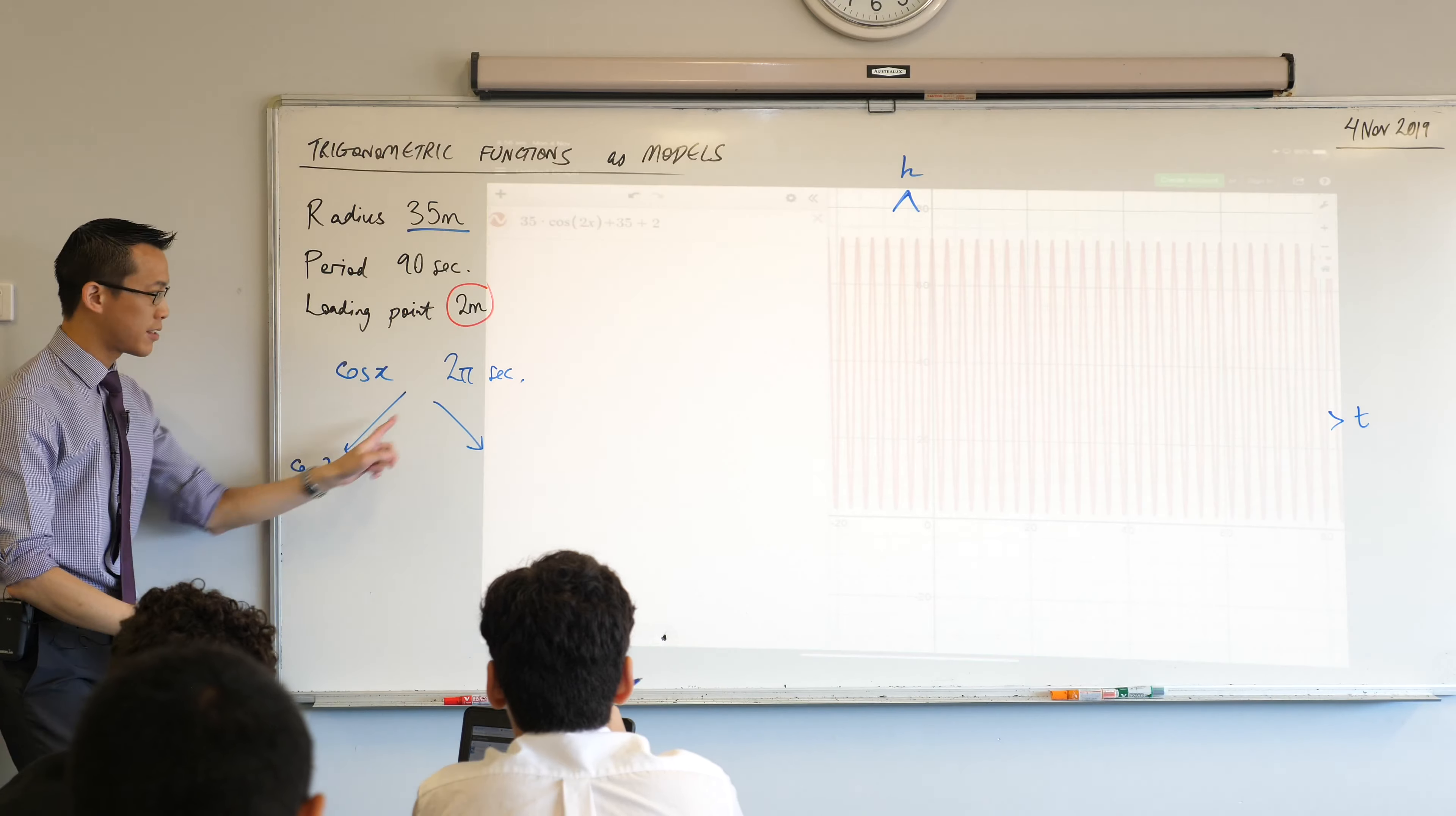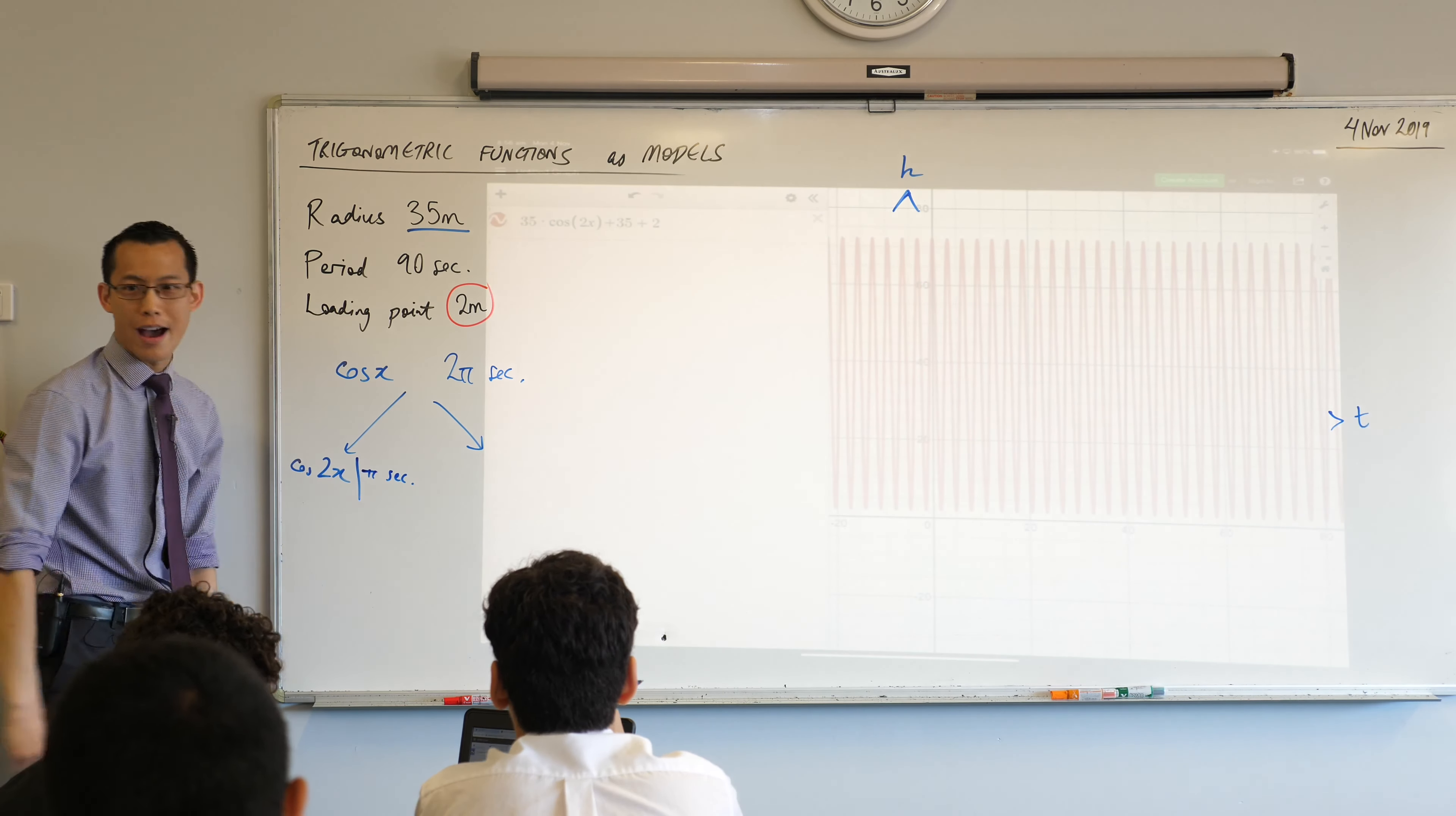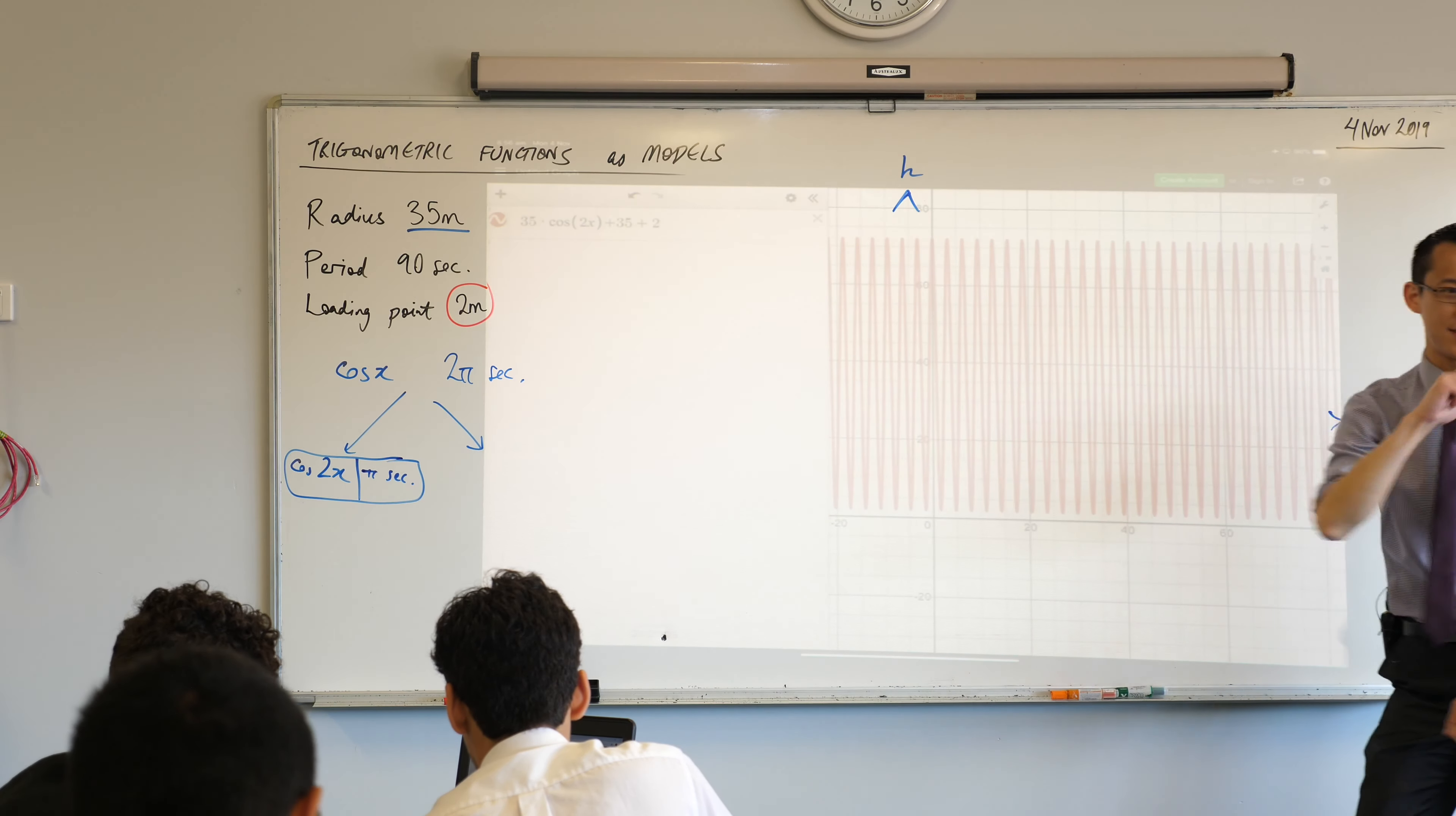Okay? Which means from 2π seconds it's going to be now? Pi. π seconds. That's a wild ride. Okay? So I don't like roller coasters regularly. I definitely would not like this Ferris wheel.